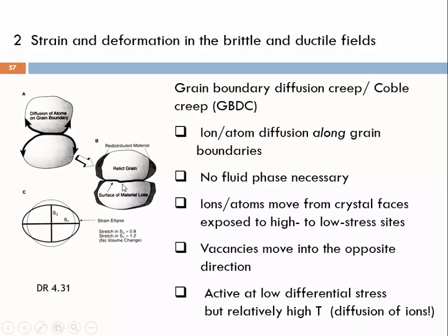The redistribution of atoms, cations and anions, in one certain direction may go together with vacancies moving in the opposite direction. If you remove material from the crystal structure at a high-stress site, it will be replaced by a void, an unoccupied structural site — that by definition is a vacancy. Typically, grain boundary diffusion creep is active at low differential stresses but at relatively high temperature, because we need diffusion and atom bondings must break so individual ions can move by reattaching and detaching from the grain surface until they come to rest in a low-stress site.